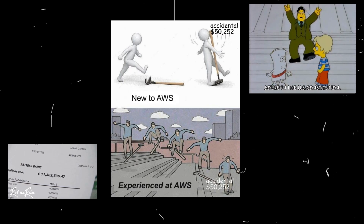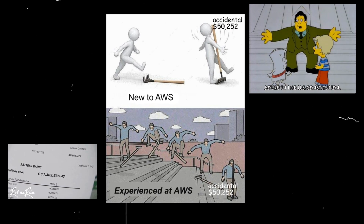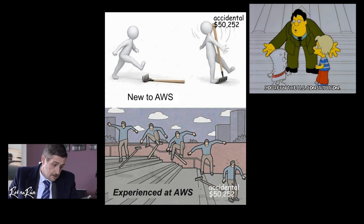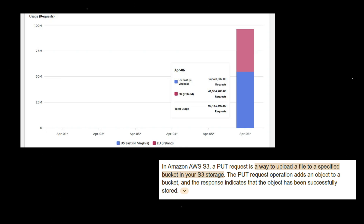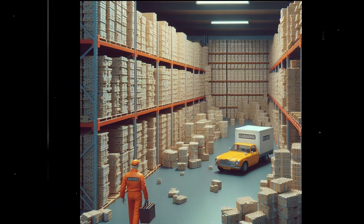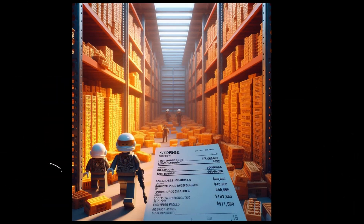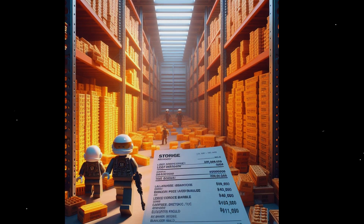Two days later, the AWS billing page delivered a punchline worthy of a dark comedy. Massey Edge's bill was a staggering $1,300, with the culprit being nearly 100 million S3 PUT requests within a single day — like returning to your storage unit to find it filled with 100 million bricks, each with a hefty invoice attached.